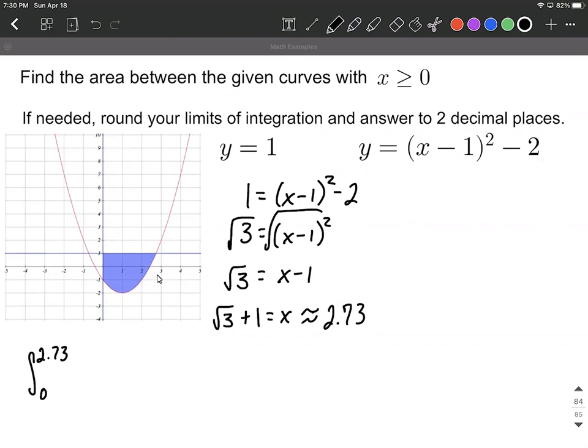Next, what we want to do is set up what goes on the inside here. It's going to be our upper function, 1, minus our lower function, the parabola down here at the bottom. So we're going to subtract away (x-1)² - 2, with a dx at the end because these are x values.